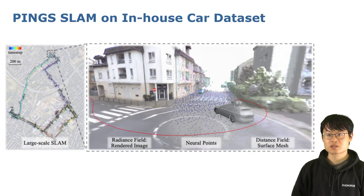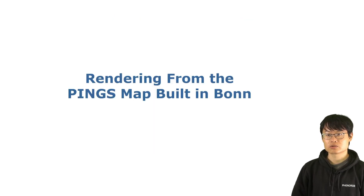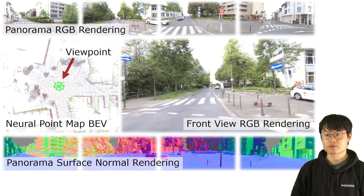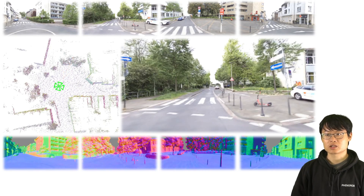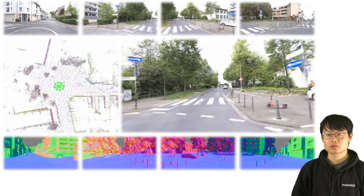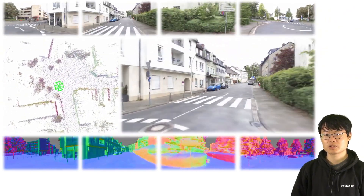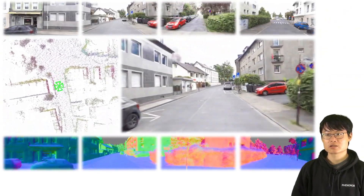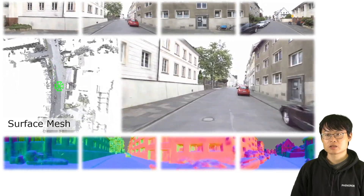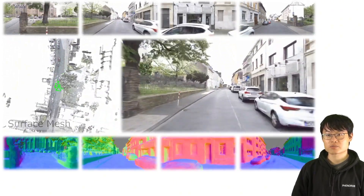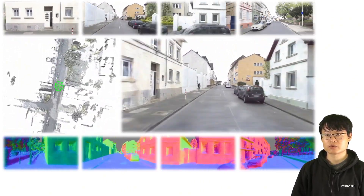We also built a PINS map of Bonn with our robot car. Now we show the rendering results from the PINS map. Here you can see the panoramic rendering and the neural point map we built. We show the RGB rendering on the top and the surface normal rendering on the bottom. We also show the surface mesh reconstructed from the distance field on the left.